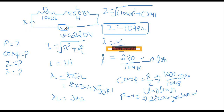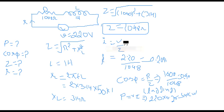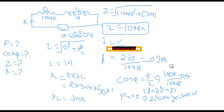To find the current in a series circuit — where current is the same throughout — we use I = V/Z. With V = 220 volts and Z = 1048 ohms, the current works out to I = 0.20 amperes.